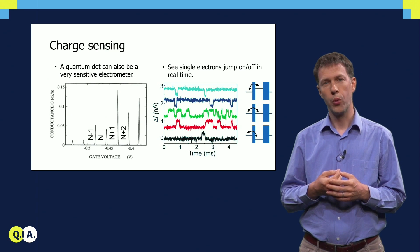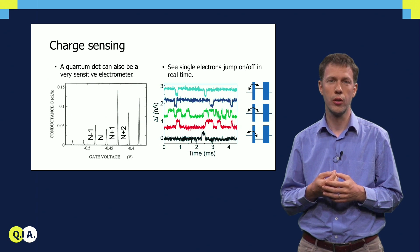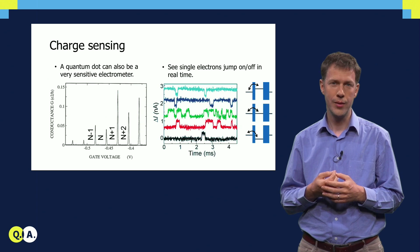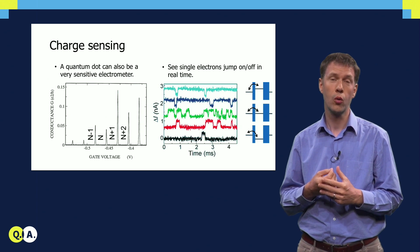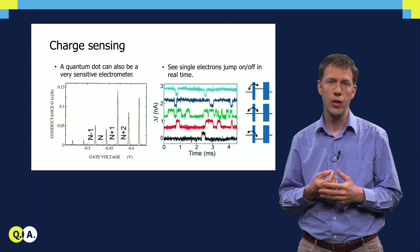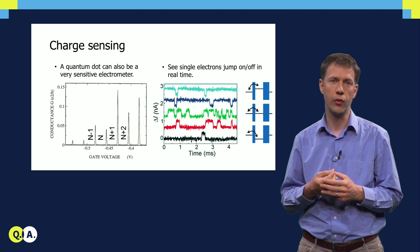A second important method to measure and detect the presence or absence of individual electrons is what we call charge sensing. Basically, if you imagine a single quantum dot, and another quantum dot next to it, as you have seen, the current through the second quantum dot sensibly depends on the gate voltage.